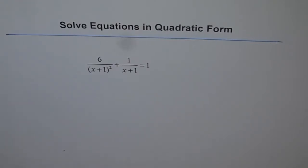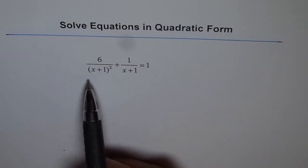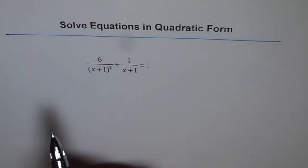Solve equations in quadratic form. So this is equation 6 over x plus 1 whole square plus 1 over x plus 1 equals 1. It doesn't really look like a quadratic equation, it is a rational equation.